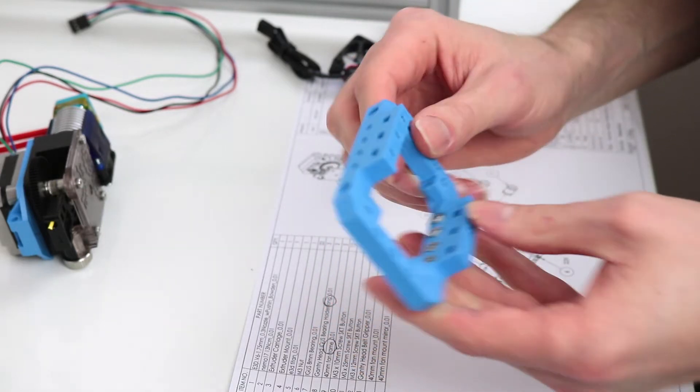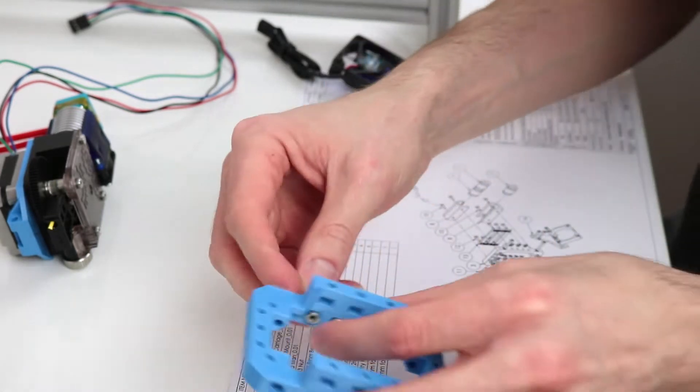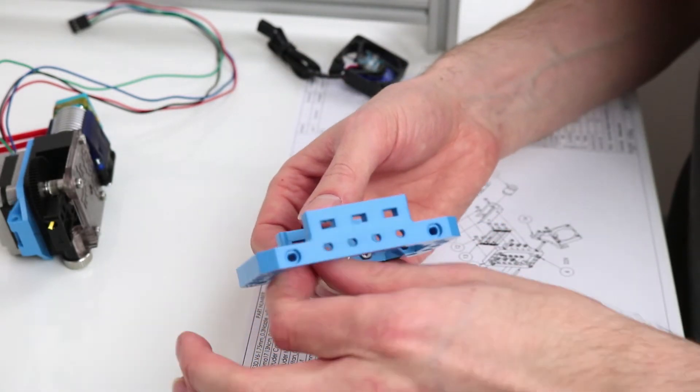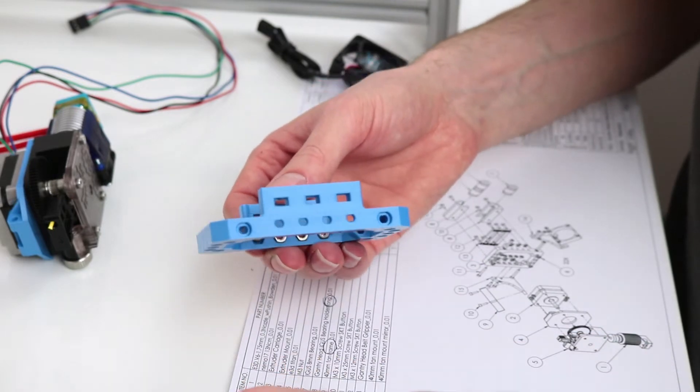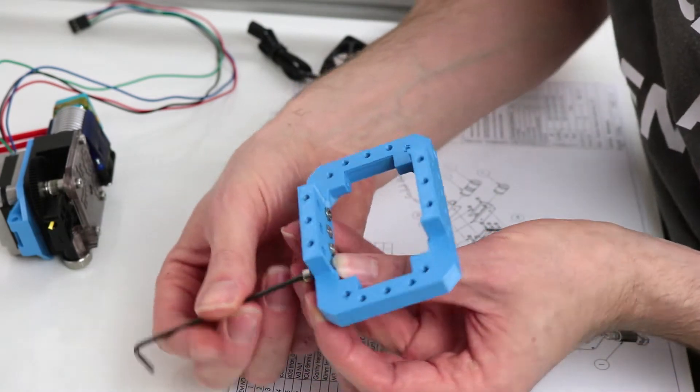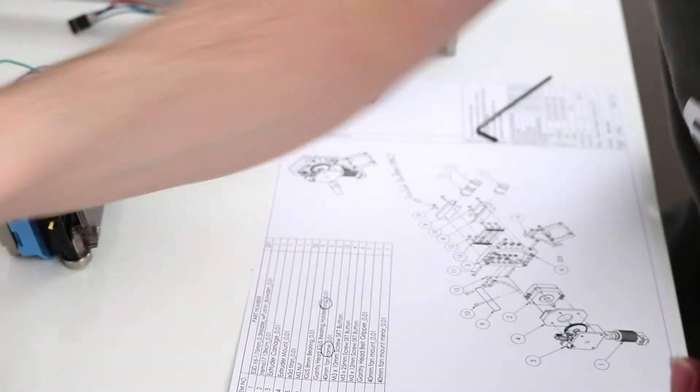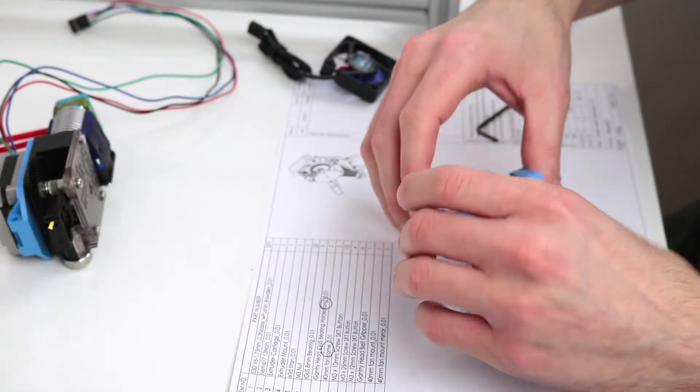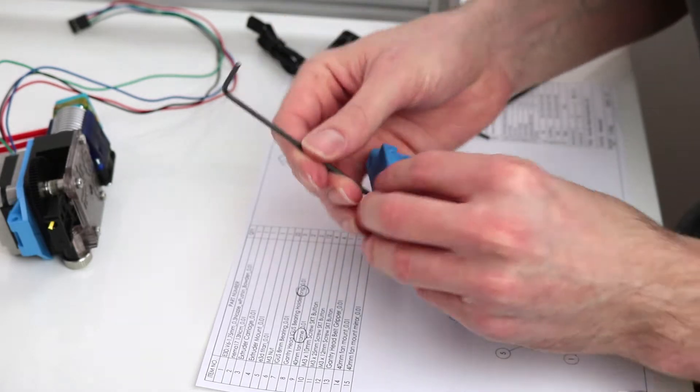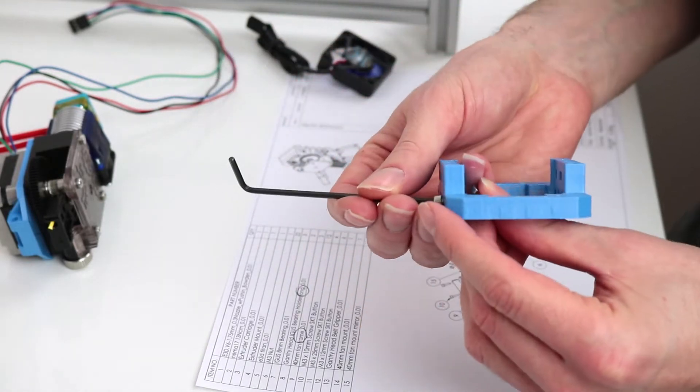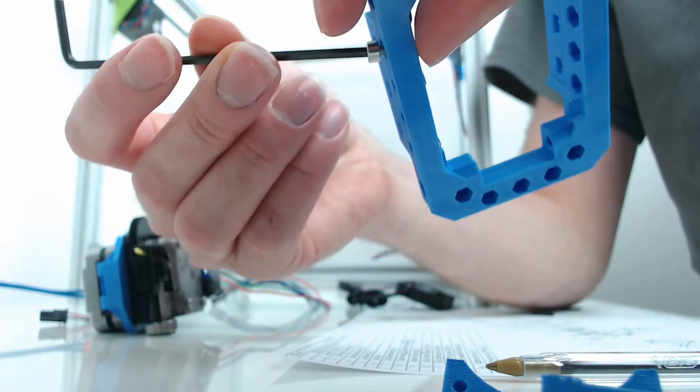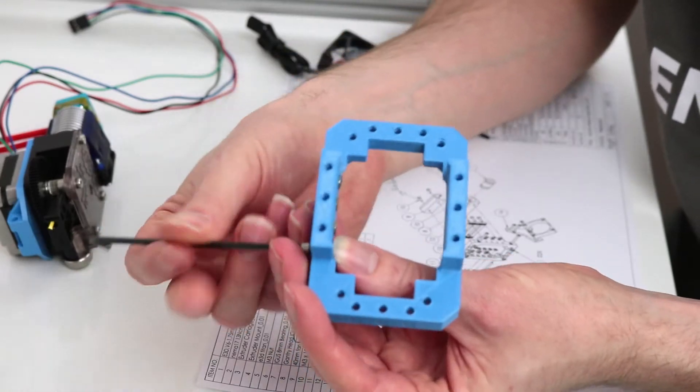For tightening these, once you put them in, you can just hold the nut in place and pull it in with the screw.